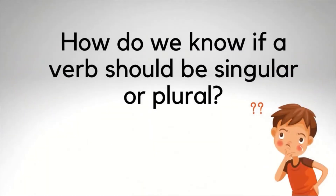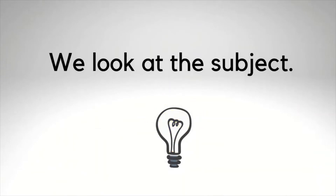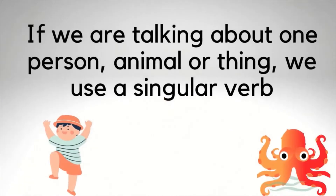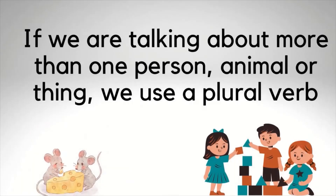But how do we know if a verb should be singular or plural? We look at the subject. If we are talking about one person, animal, or thing, we use a singular verb. If we are talking about more than one person, animal, or thing, we use a plural verb.